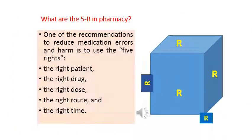What are the five R's in pharmacy? One of the recommendations to reduce medication error and harm is to use the five rights. That means: the right dose of a right drug is given to a right patient, at the right time, by using the right route of administration — to reduce medication error to the patient.